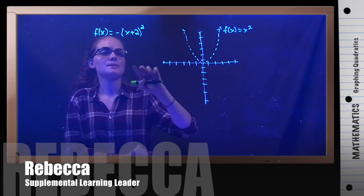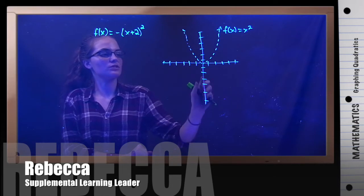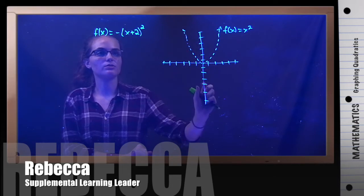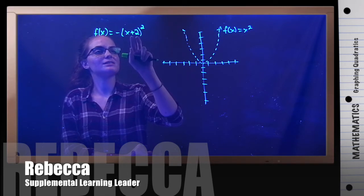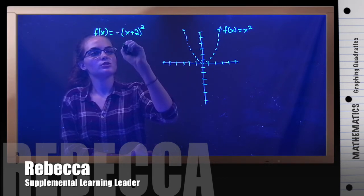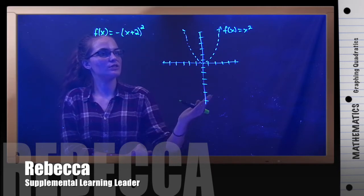Now, if there's anything added or subtracted, it's going to shift either right, left, or up or down. Here, 2 is added, but it is added on the inside of the parentheses. So it's not added to the outside, because if it were added to the outside, it would be shifted up or down.